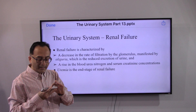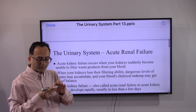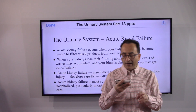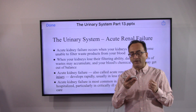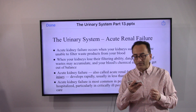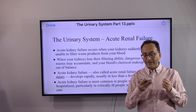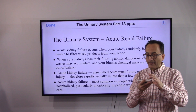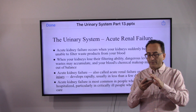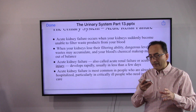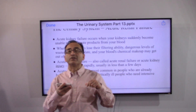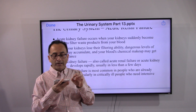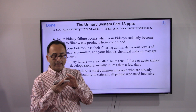Acute renal failure occurs when the kidney suddenly becomes unable to filter waste products from the blood. When kidneys lose their filtering ability, dangerous levels of waste may accumulate and your blood's chemical makeup may get out of balance. Acute kidney failure — also called acute kidney injury — develops rapidly, usually in less than a few days.